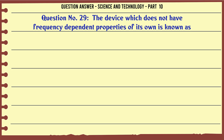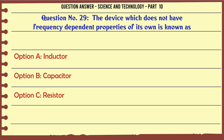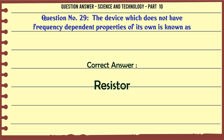The device which does not have frequency-dependent properties of its own is known as. A. Inductor. B. Capacitor. C. Resistor. D. All of the above. The correct answer is Resistor.